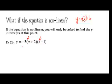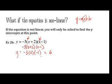We're just going to replace X's with 0. So negative 3 times 0 plus 2 times 0 minus 1. Which is going to be negative 3 times 2 times negative 1. Well, what is that? Negative 3 times 2 is negative 6 times negative 1. So it's a positive 6.